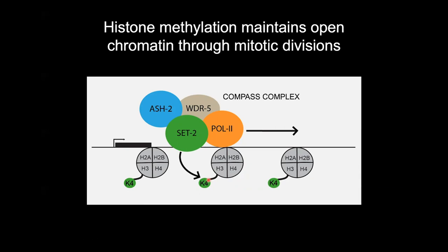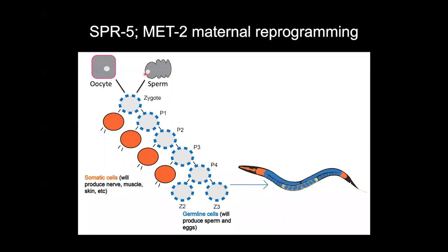However, there are situations where this provides a problem. What about when you have to change cell fate? An extreme example is at fertilization, when you have to go from a highly specialized oocyte and sperm to form a totipotent zygote. You don't want all this open active chromatin — this active mark K4 at oocyte genes and sperm genes — creating a memory of germline gene expression in your totipotent zygote that needs to immediately become either somatic tissue or germline.